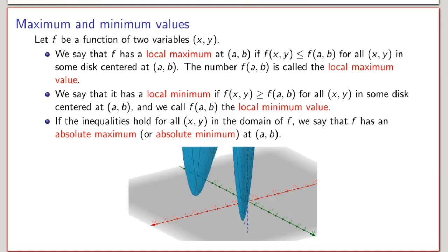Let me start by defining the concept of maxima and minima for functions of two variables. Let f be a function of two variables x and y. We say that f has a local maximum at a point (a, b) if f(x, y) is less than or equal to f(a, b) for all (x, y) in some disk centered at (a, b). The number f(a, b) is called the local maximum value. Similarly, f has a local minimum at (a, b) if f(x, y) is greater than or equal to f(a, b) for all (x, y) in some disk centered at (a, b).